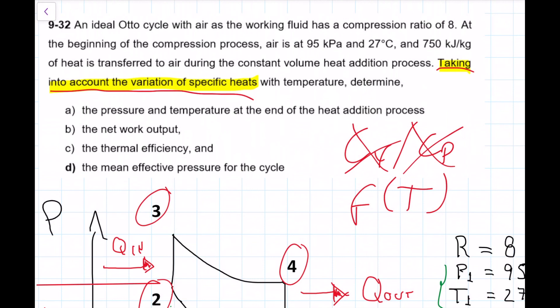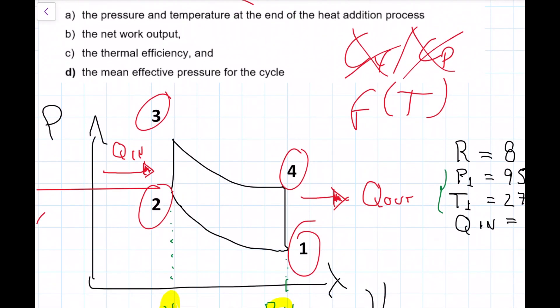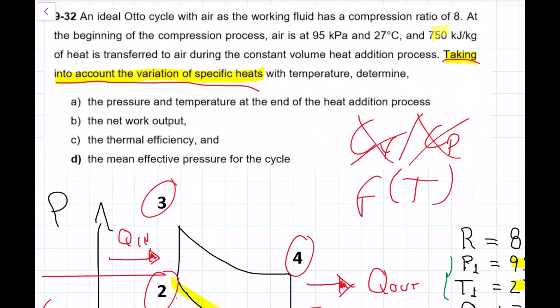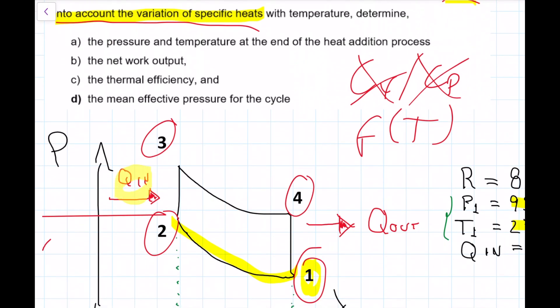And then last but not least, check out that the way the information is given, and this is going to be the case for all the cycles from now on, it says at the beginning of the compression process, air is 95 and 27 Celsius. So it doesn't tell you this is 1, 2, 3, or 4. So this is up to you to know, right? Because if you know that, you need to know where is the compression process. Well, we know compression is from here to here. So the beginning of the compression process is going to be my 1. So therefore, what they're saying is, P1 and T1 are 95 and 27. And also, the 750 that is transferred in the heat addition process, that happens here. So we have 750 going on here. So from 2 to 3.